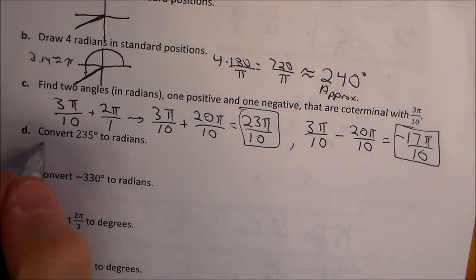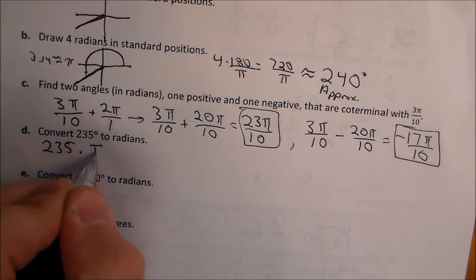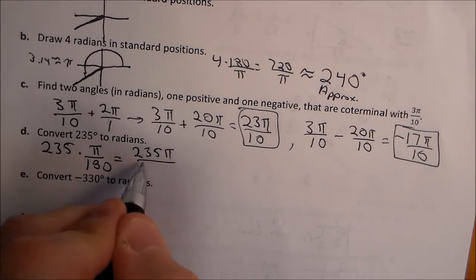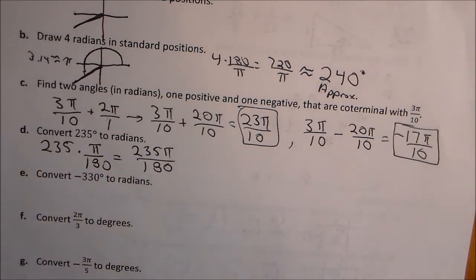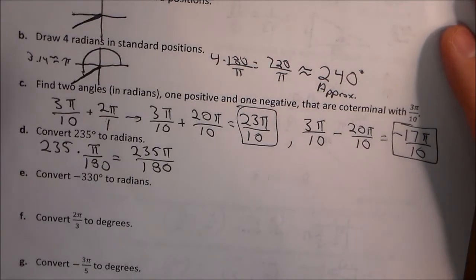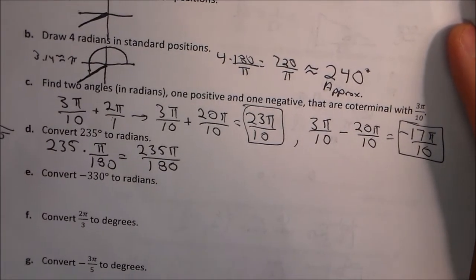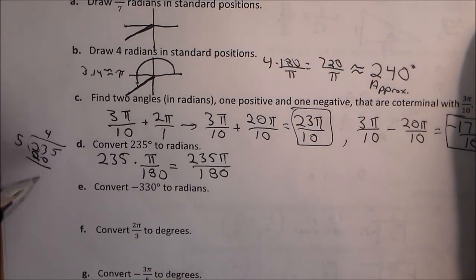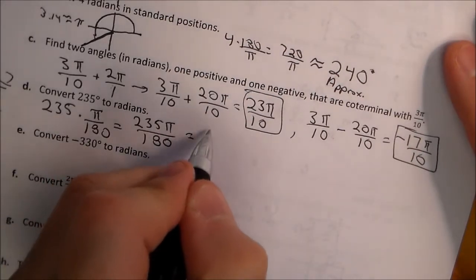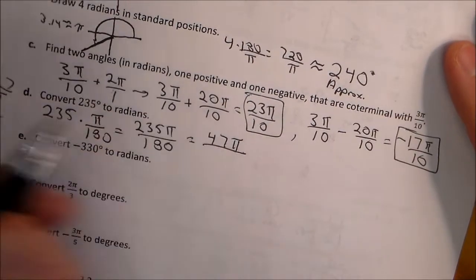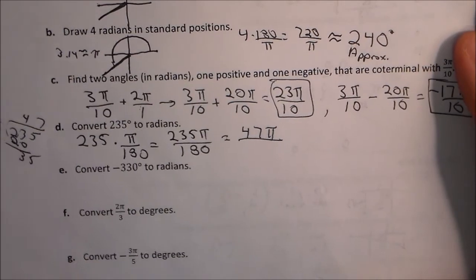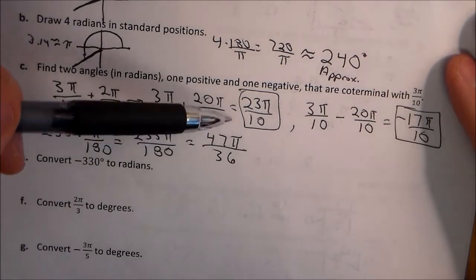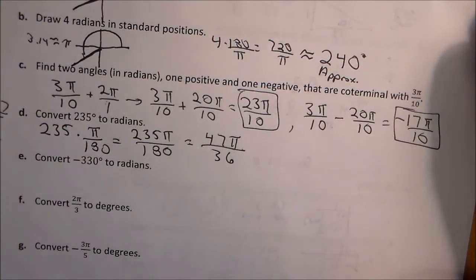To convert 235 degrees to radians, we multiply 235 times π over 180, giving 235π over 180. We can divide both by 5: 235 divided by 5 is 47, and 180 divided by 5 is 36. So we're left with 47π over 36, which is our exact answer.